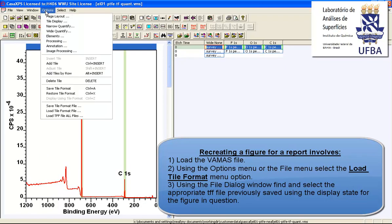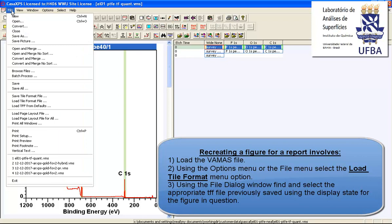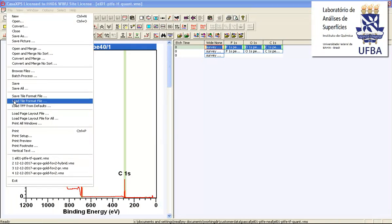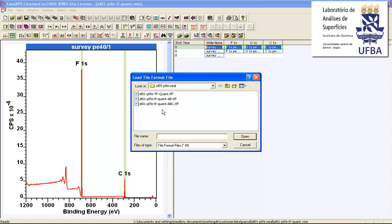However, we have an option on the options menu that says load tile format file. This option is also on the file menu, and I've previously prepared these TFF files that represent different display states.